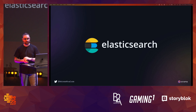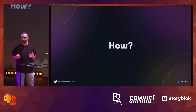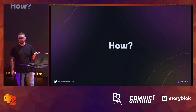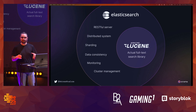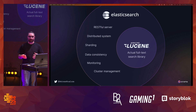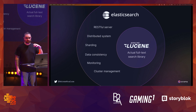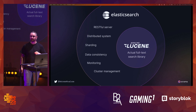It was incredible to see how fast it was while handling millions and millions of records with good performance — it was blowing me away. I started investigating the core of Elasticsearch and eventually found out that it wraps Apache Lucene, the actual full-text search library. Elasticsearch provides a RESTful interface, distributed system capabilities, automatic sharding, data consistency, monitoring, and cluster management — everything on top of Apache Lucene.